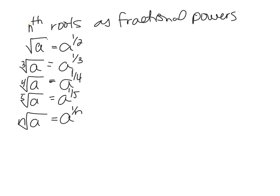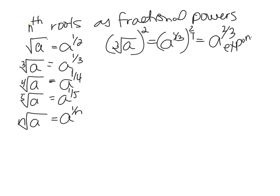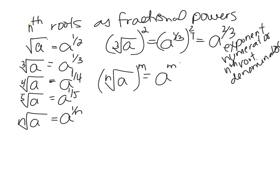Now, if you're raising that to any power, so say we have the cube root of a squared, this is a to the 1/3 power squared. And to multiply fractions, we multiply by 2 over 1, and we get a to the 2/3. So we see that the exponent becomes the numerator and the root becomes our denominator. So the general form is nth root of a to the m power is a to the m over n.